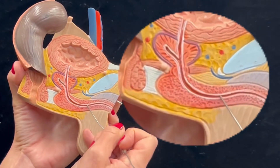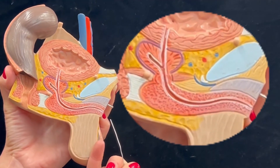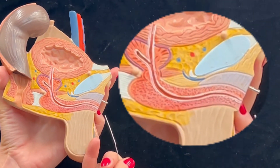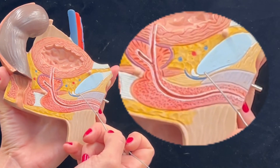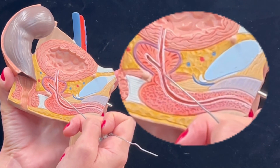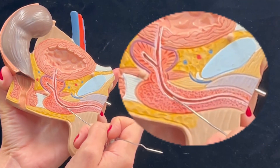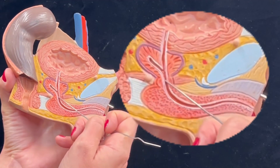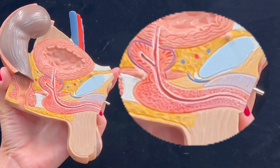And finally, the spongy urethra. The way I tell students to remember the order of the male urethra is to remember that males have PMS — P for prostatic, M for membranous, and S for spongy urethra. So males have P, M, S. That's the order of the male urethra.